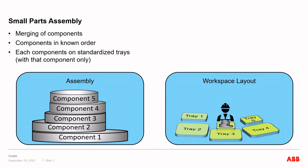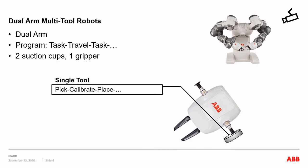We want to automate this using a robot, so programming the robot and redesigning the layout must be fast and yield high throughput. A dual-arm multi-tool robot is exemplified by ABB's Yumi robot. Each arm's program can be characterized as performing a task followed by transportation to the next task — that is, task, travel, task, travel, and so on. The robot's arms work in parallel, as each arm works independently of the other.